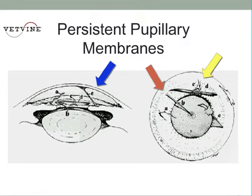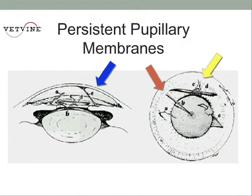Persistent pupillary membranes can take one of three different configurations. In this case, as we saw, the pupillary membranes traverse the iris itself. The yellow arrow here points to a pupillary membrane that traverses across the iris from one point of the collarette to another. This is fairly common, and we can see them as a single strand or multiple strands within an eye or in both eyes.